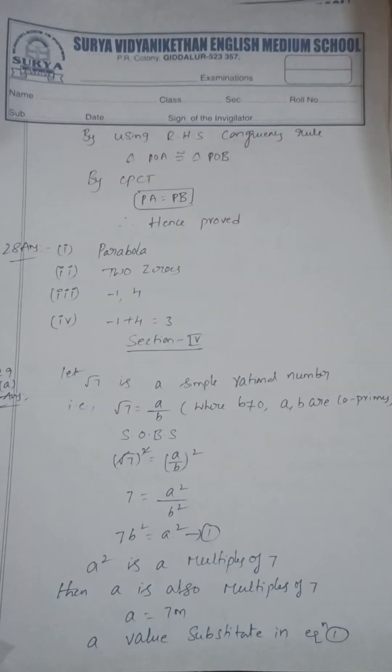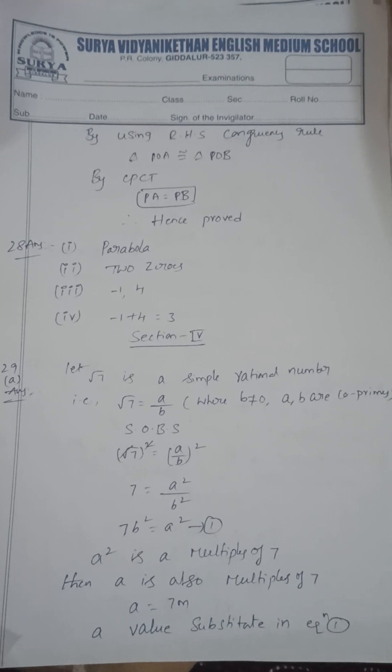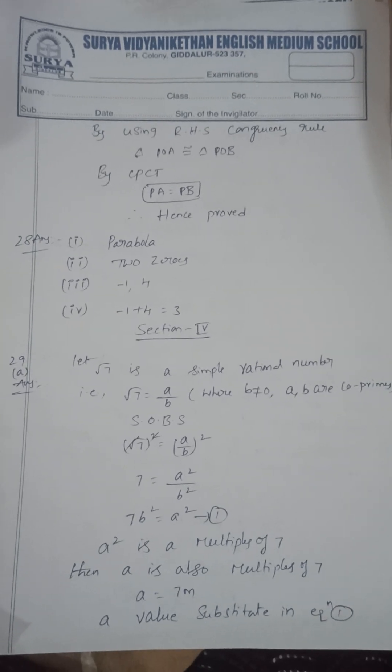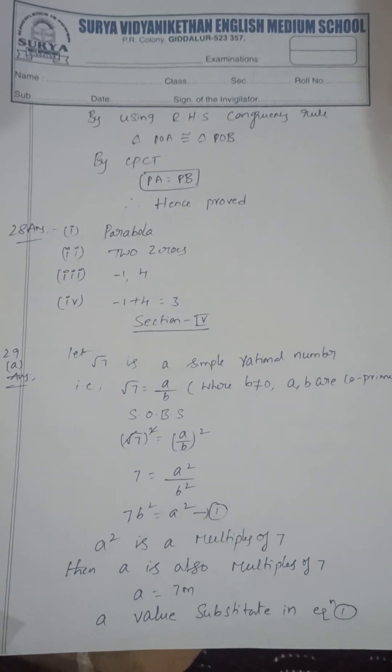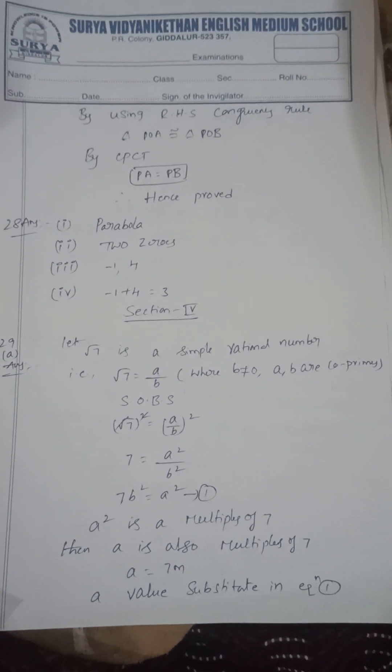Next, 28: the shape of the graph is parabola. How many zeros? Two zeros, minus one and four. The sum of the zeros is minus one plus four is three.